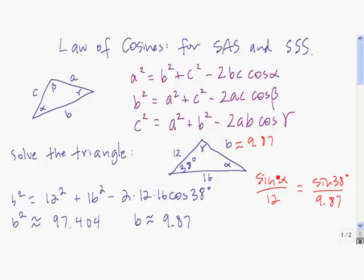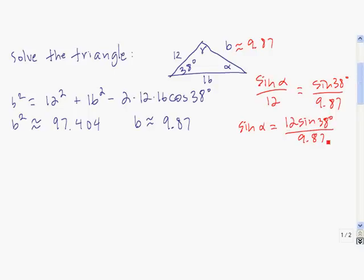That means to find alpha we have to solve the equation: sine of alpha is equal to 0.749.